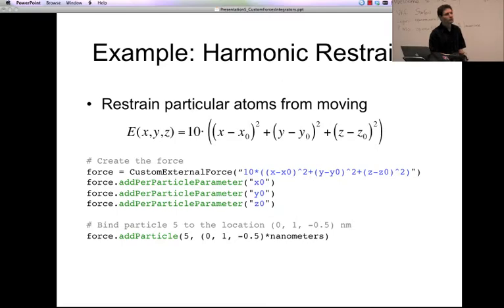And now we just have to tell it what particles we want to actually apply this restraining force to. You could apply it to one particle, you could apply it to every particle, whatever you want. And the way you do it is you just call add_particle for every particle you want this force applied to. So we say force.add_particle. We pass in what particle we want it applied to. So let's say number five. And then you give it just a tuple here, which is the values of all the per-particle parameters. So we're just going to restrain particle 5 to the location 0, 1, minus 0.5 nanometers. And that's all you have to do. And now you've just created this harmonic restraining force in just a few lines of Python code.